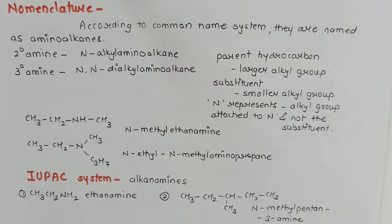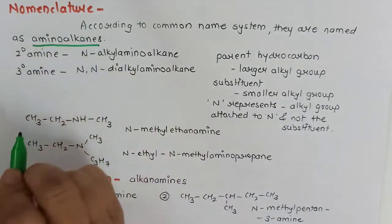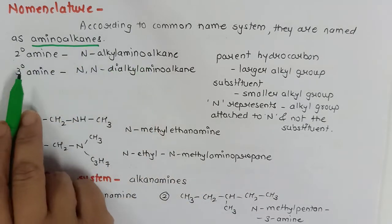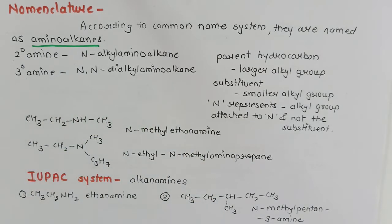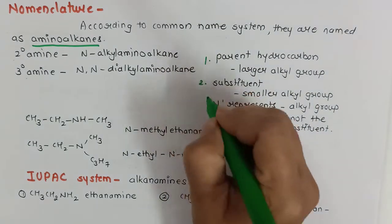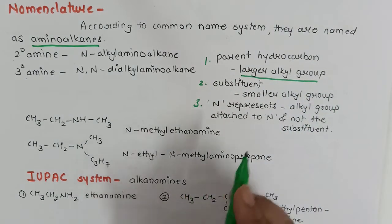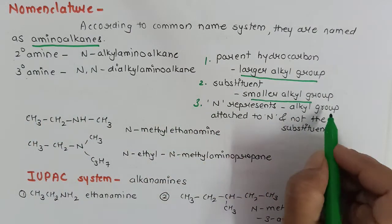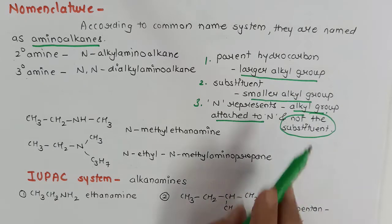Let us study the nomenclature. According to the common naming system, primary amines are named as aminoalkanes, secondary amines as N-alkylaminoalkane, and tertiary amines as N,N-dialkylaminoalkane. The parent hydrocarbon is taken as the larger alkyl group, and the substituent is the smaller alkyl group. The 'N' prefix represents the alkyl group attached to nitrogen and not the parent chain substituent.